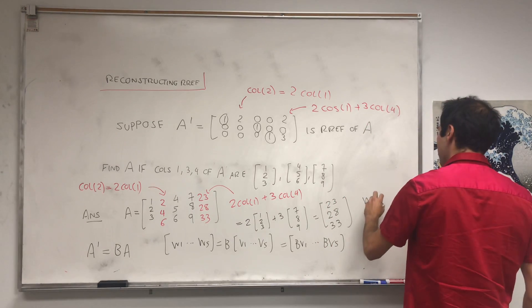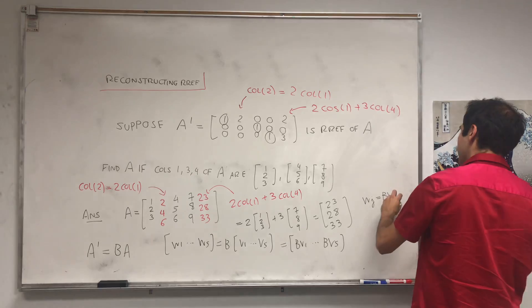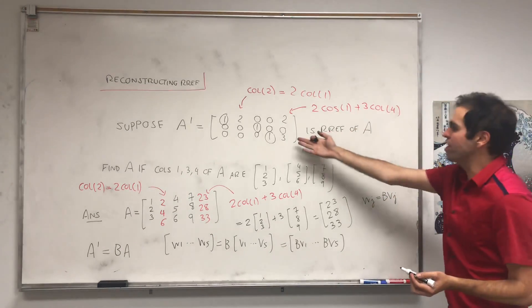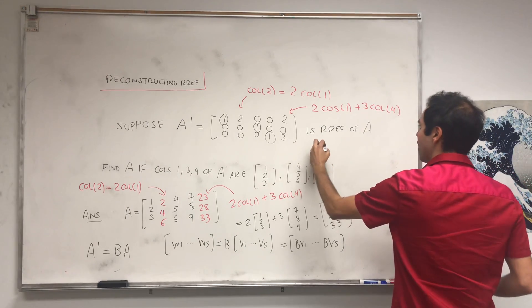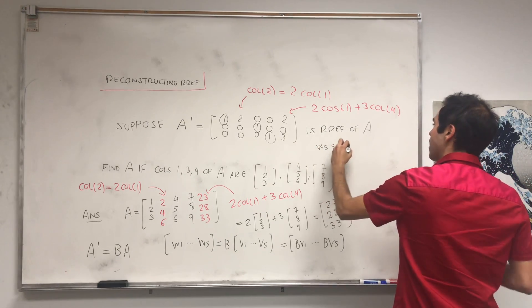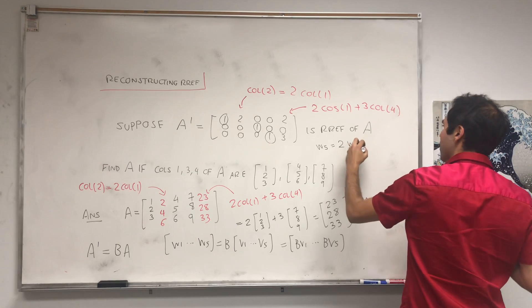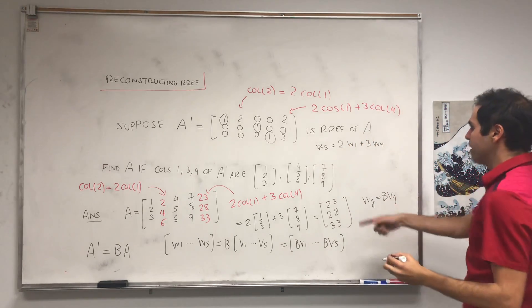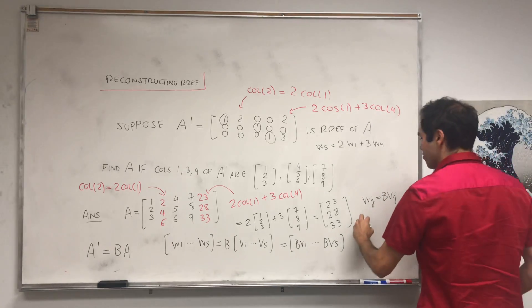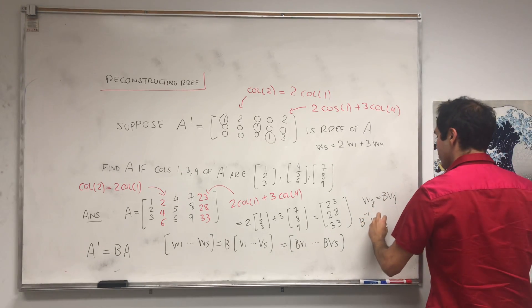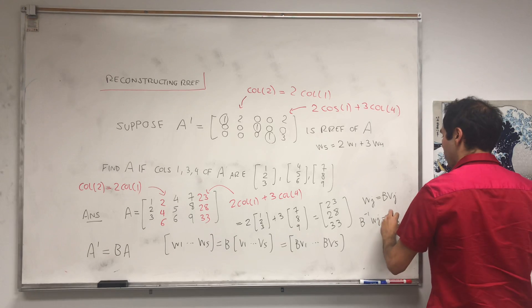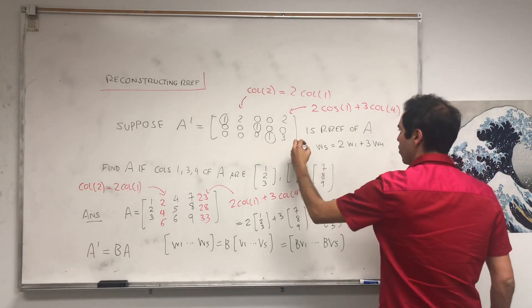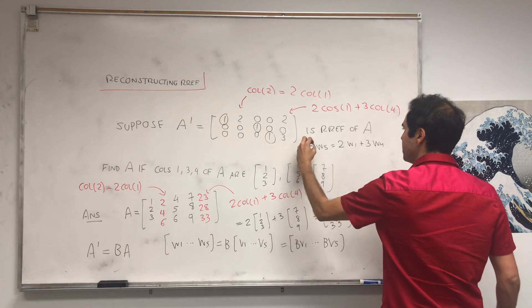So what do we know? WJ equals BVJ, and then it just relies on the fact, for example here, W5 is two times W1 plus three times W4. And then to get VJ, you multiply by B inverse, so B inverse WJ is VJ.